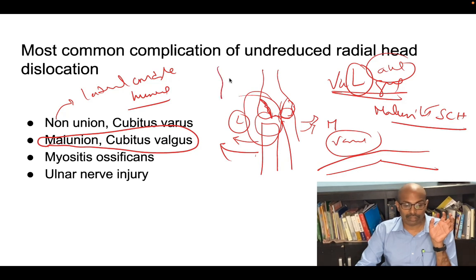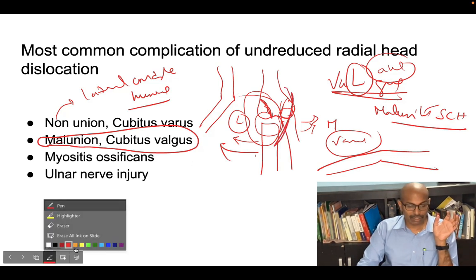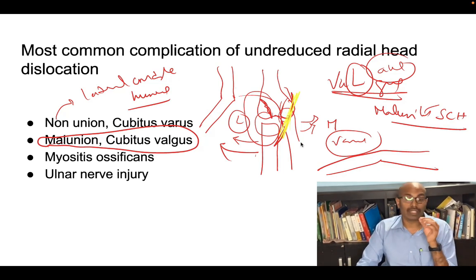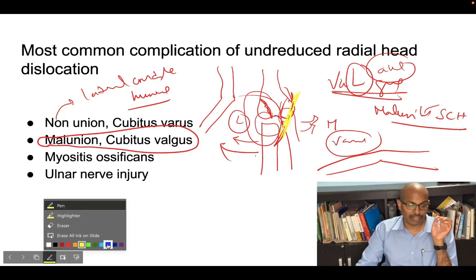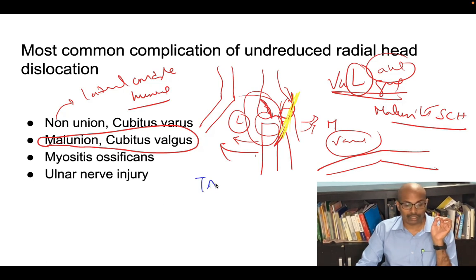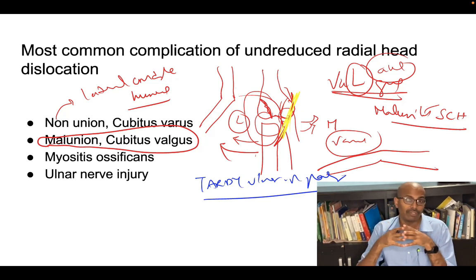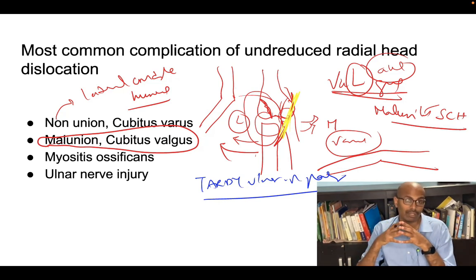When the arm goes into severe valgus, the ulnar nerve gets stretched behind the medial epicondyle, causing tardy ulnar nerve palsy. Cubitus varus from malunited supracondylar fracture and cubitus valgus from lateral condyle non-union — these are very commonly asked questions. Distal humerus deformities and their nerve complications should be well understood.